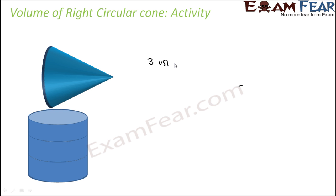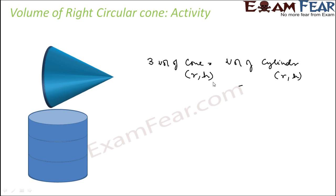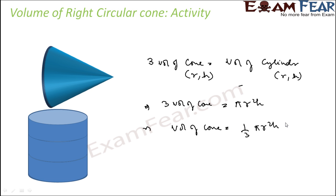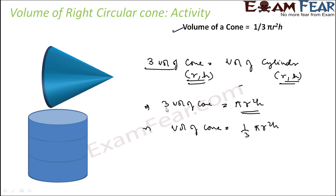Three times the volume of the cone equals the volume of the cylinder. The cylinder has radius r and height h, and so does the cone. The volume of a cylinder is πr²h, so 3 × volume of cone = πr²h, which means the volume of cone is (1/3)πr²h. That is the formula for the volume of a cone.